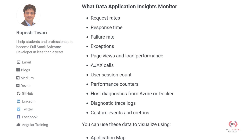What kind of data can we log? You can understand request rates — how many requests are coming, what is the response time from the server, how many times requests are failing and what the failure rate is, whether there are any exceptions in the system, what the view load time performance is, and whether there are HTTP or AJAX calls. You can also track how many user sessions have been created and all performance counters.